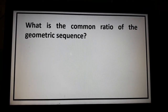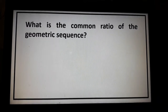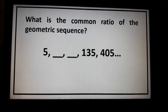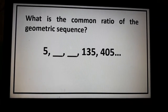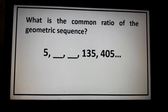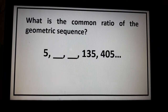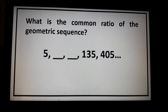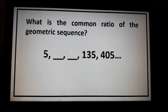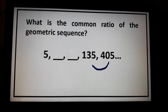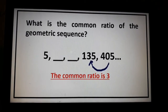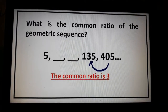Third example. What is the common ratio of the geometric sequence 5, blank, blank, 135, 405? We can get the common ratio by dividing two consecutive terms. In this case, 135 and 405 are consecutive terms, so we can just divide: 405 divided by 135. Therefore, the common ratio is positive 3.